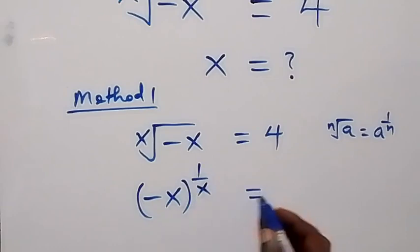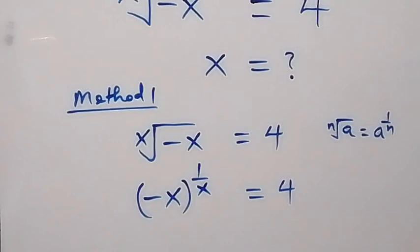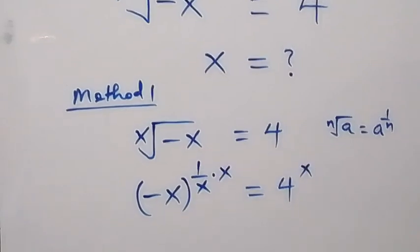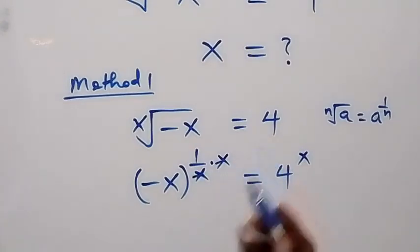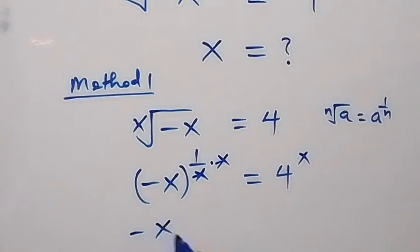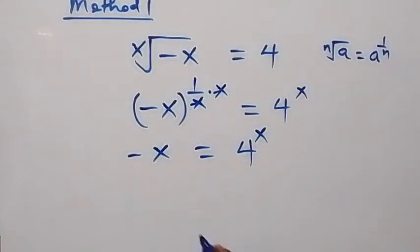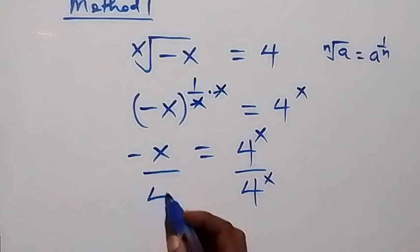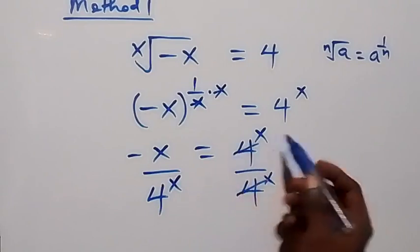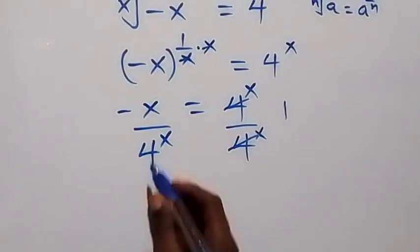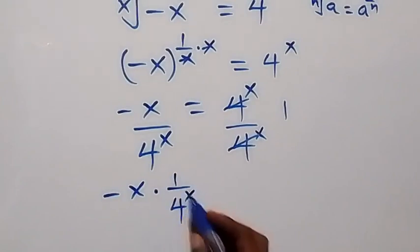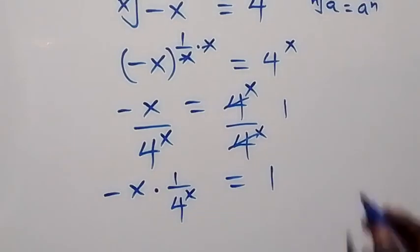Applying this, we have minus x raised to power one over x equals 4. To remove the one over x in the exponent, we multiply both powers by x. The x's cancel, giving us minus x equals 4 raised to power x. Dividing both sides by 4 raised to power x, we get minus x times one over 4 raised to power x equals 1.